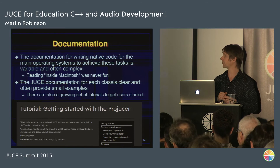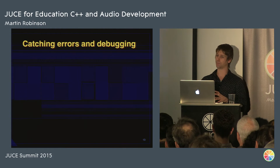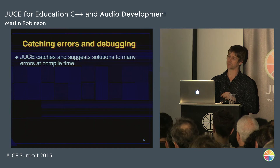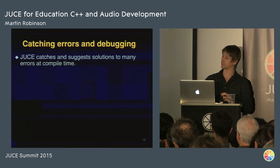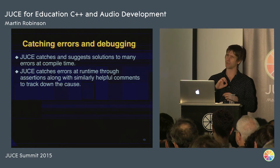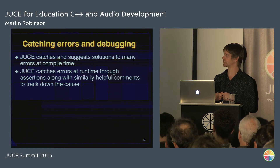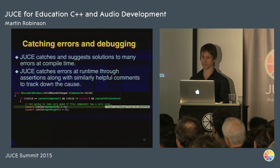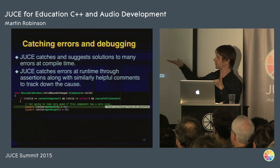Catching errors in debugging is really, really important. JUCE catches errors with assertions quite often — there aren't many exceptions used in JUCE, and Jules tries to minimize those — but it catches them through assertions, or even compile-time assertions. So when you've done something stupid, if you forget to resize or set the size of your component, you get the message: 'not going to look very good if this component has a zero size.' It hits an assertion as soon as the app runs and tells you what you've done wrong.